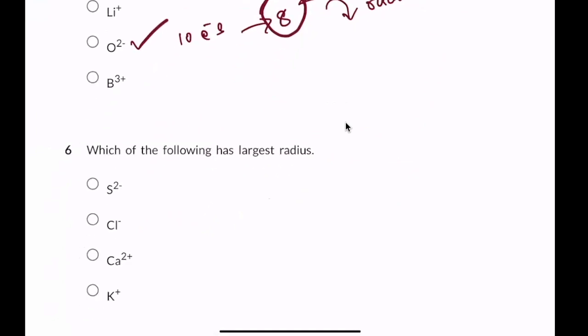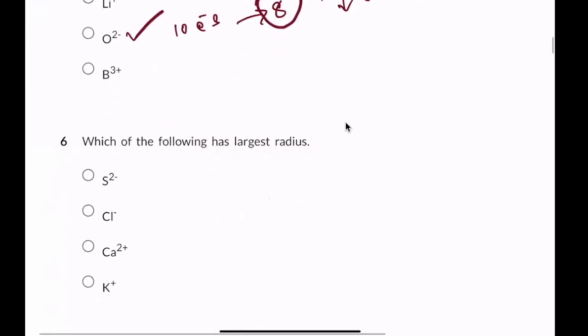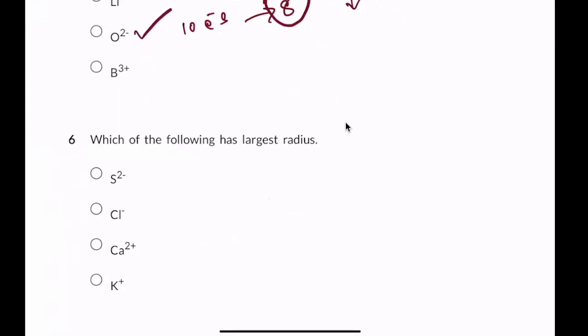Which of the following has the largest radius: S2-, Cl-, Ca2+, K+? These are isoelectronic species. Along the group, size decreases. Considering chlorine and sulfur — sulfur has a lower atomic number than chlorine.